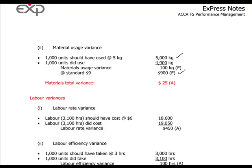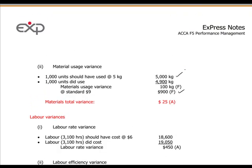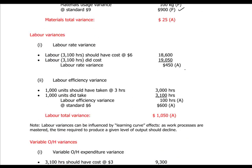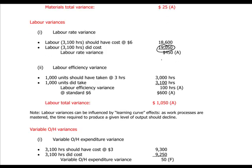The total material variance in this case is a $25 adverse variance because of the $925 that was adverse. Labour variance works in the same way — there's an efficiency element that takes hours into consideration, and a rate variance which is the cost: how many hours did we work and what was the standard cost versus the actual hourly rate paid.